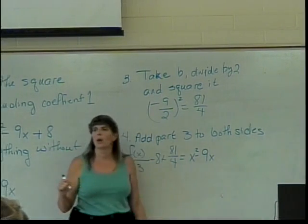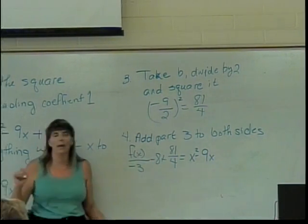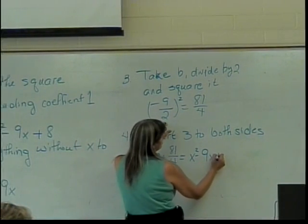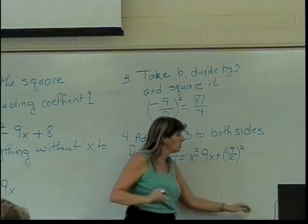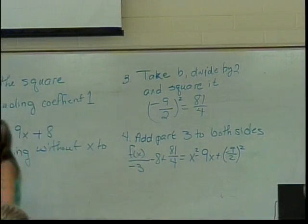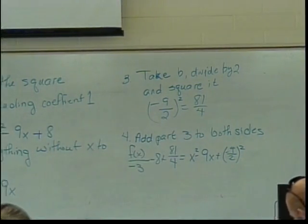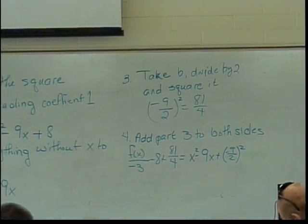And here's where I don't simplify. I'm going to add in plus (negative 9 halves) squared. The reason for not simplifying is if you have a really messy thing, not simplifying makes it easier to factor.